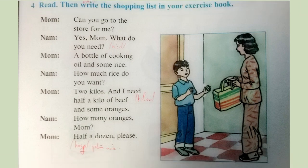4. Read. Then, write the shopping list in your exercise book. Can you go to the store for me? Yes, Mom. What do you need? A bottle of cooking oil and some rice. How much rice do you want? 2 kilos. And I need half a kilo of beef and some oranges. How many oranges, Mom? Half a dozen, please.